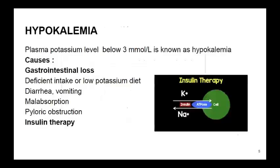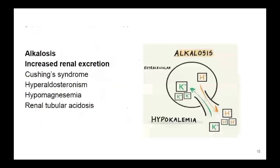Moving on to disease states. First is hypokalemia — 'hypo' means deficit or decreased. A plasma potassium level below 3 millimoles per liter is known as hypokalemia. Causes include gastrointestinal causes like deficient intake or low potassium diet, diarrhea, vomiting, malabsorption, and pyloric obstruction. Insulin therapy promotes the entry of potassium into the cells by increasing the activity of the sodium-potassium ATPase pump. Alkalosis causes potassium to enter into the cells in exchange for hydrogen ions.